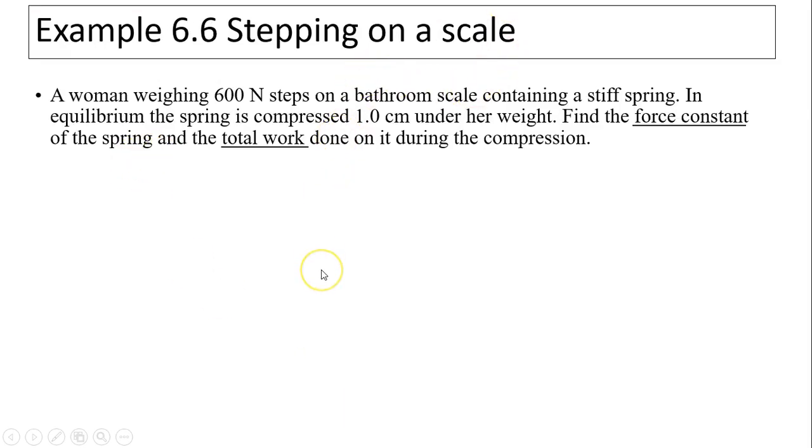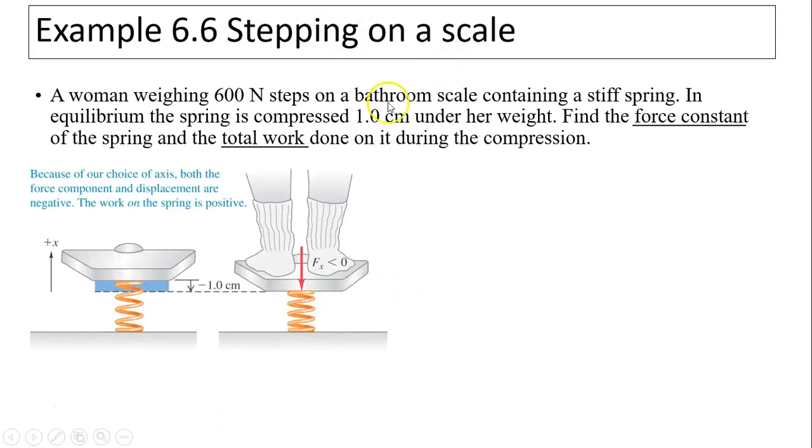Let's take a look at this example. When you step on a scale, a woman weighing 600 newtons steps on a bathroom scale containing a stiff spring. In equilibrium, the spring is compressed under her weight. Find force constant and total work done on the spring during compression. So this is work done on the spring. The spring has energy. In this case, you first draw a situation, then you also have to define which direction is positive and which direction is negative.